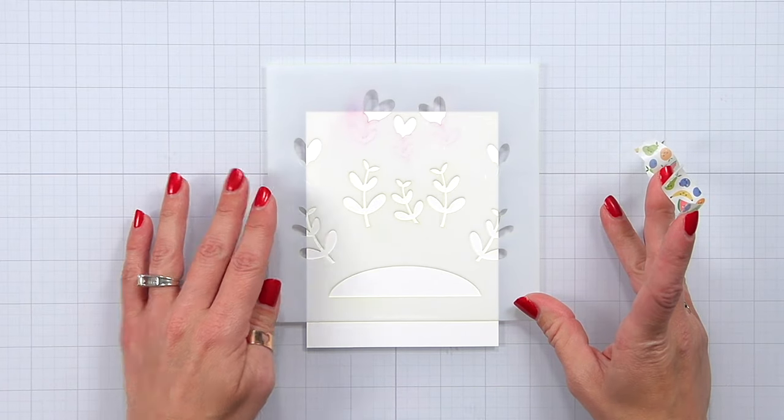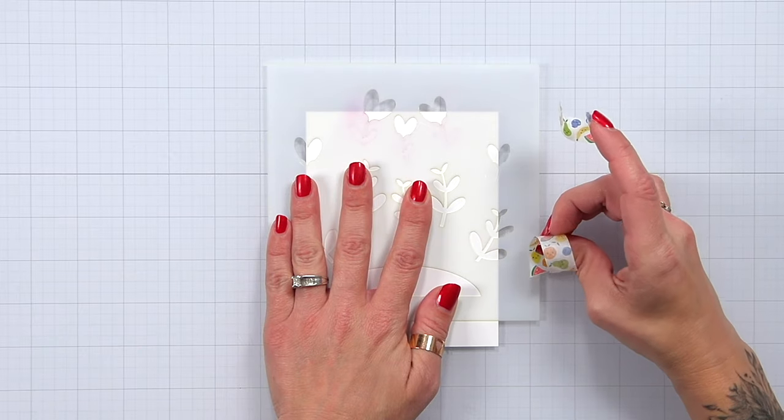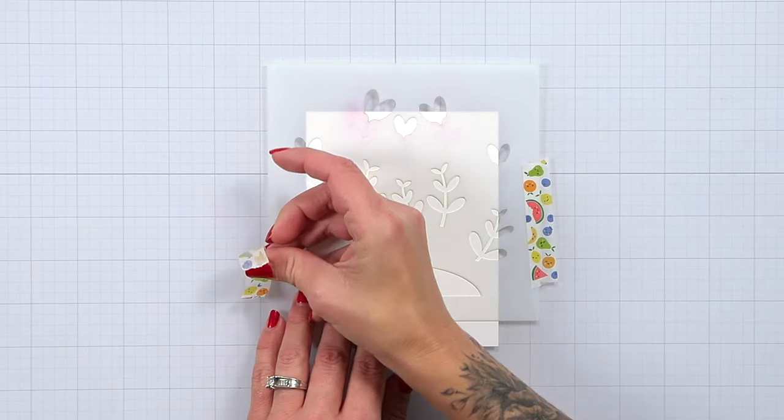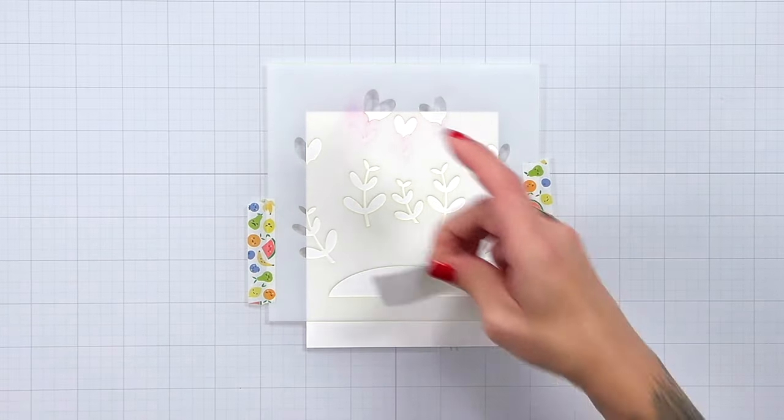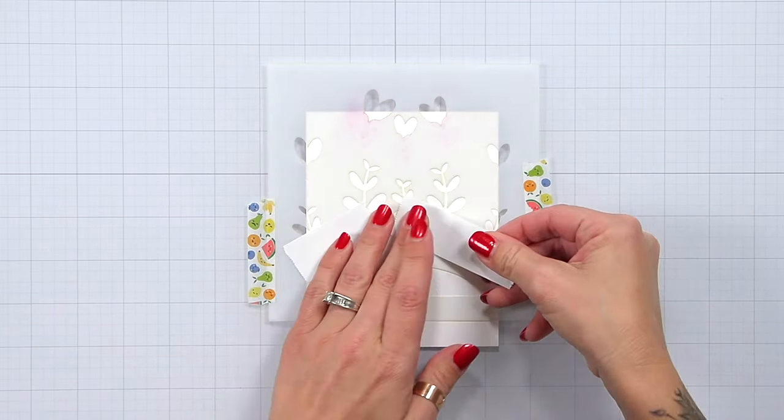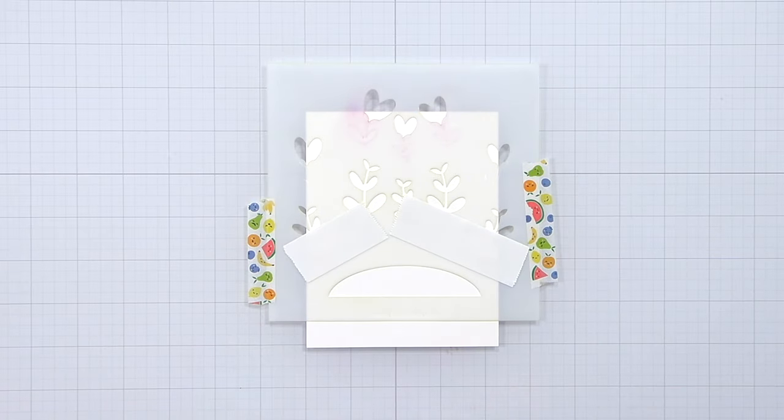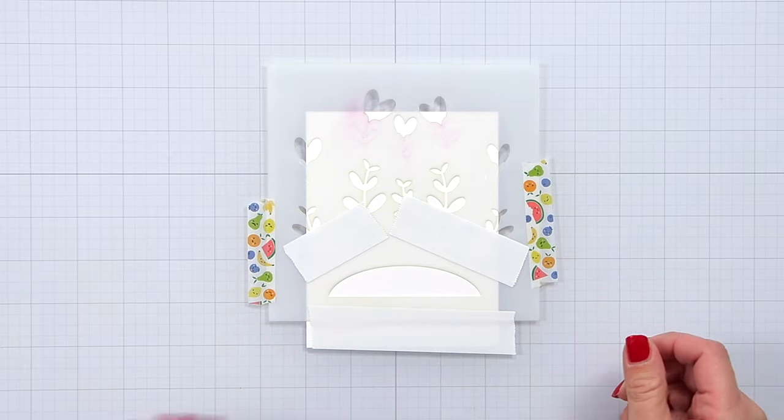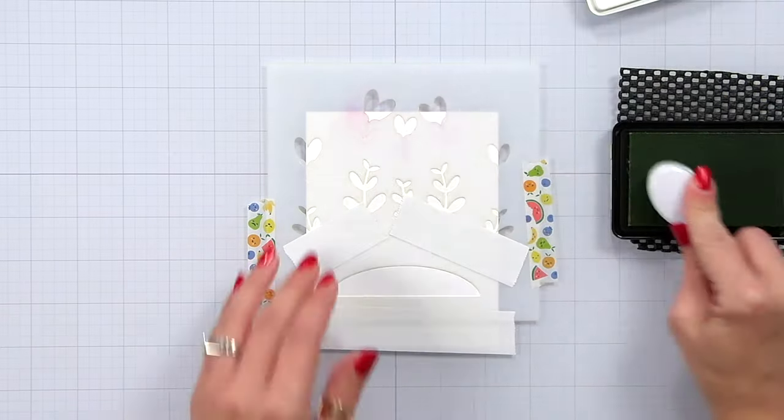Then I'm going to align the grass about a third of the way up from the bottom of my card and hold the stencil down using this really cute fruit salad washi tape. I'm also going to use some post-it tape to mask off the area above and below in case I get a little carried away with my ink blending.